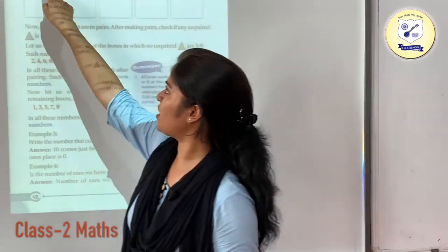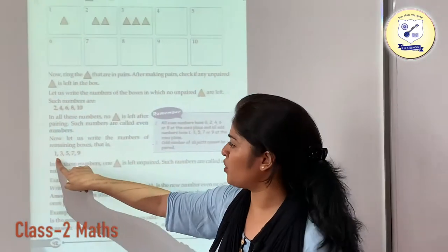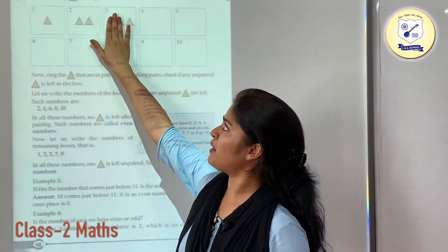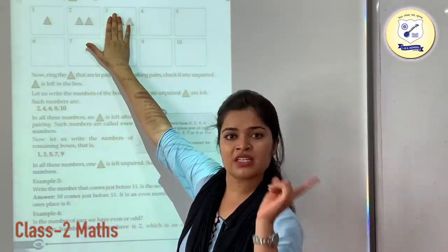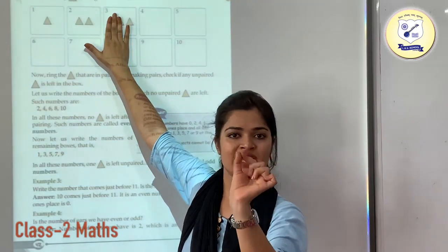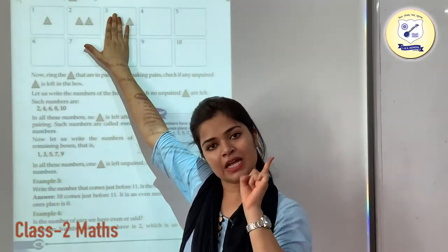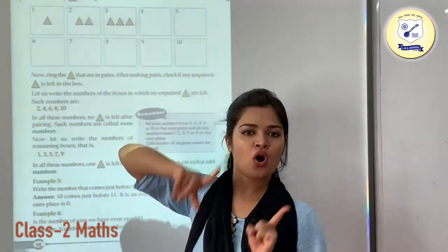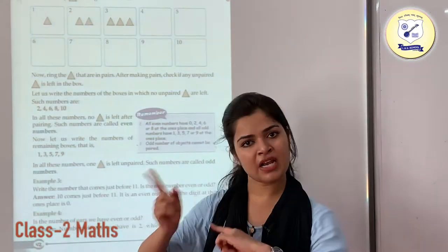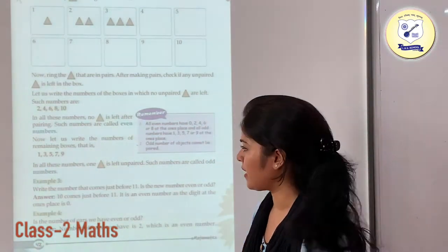As you can see, here we do not have a pair, so this is going to be your odd number. Here also we made a pair of 2, but after making the pair we are left with 1 triangle — so that is again your odd number. Our odd numbers are 1, 3, 5, 7 and 9.